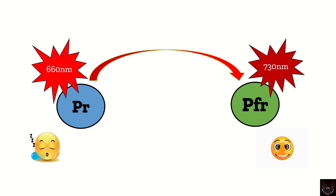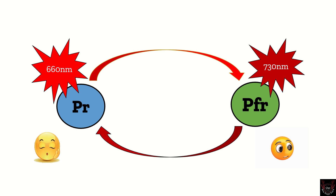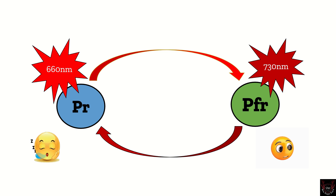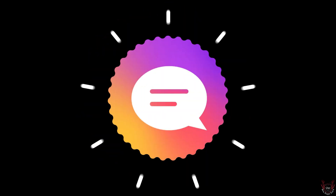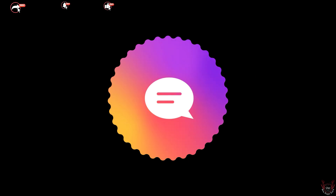When this active form of phytochrome, Pfr, absorbs far red light of 730 nanometers, it gets inactivated and converted back into the inactive form Pr. This conversion can also happen automatically if Pfr is not exposed to white light or red light for a long time — this is called dark conversion, which is a slow process.